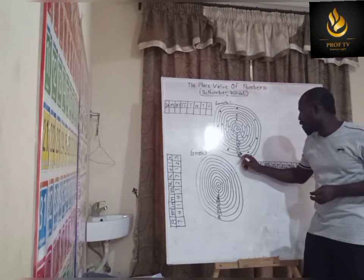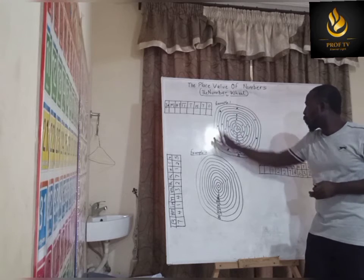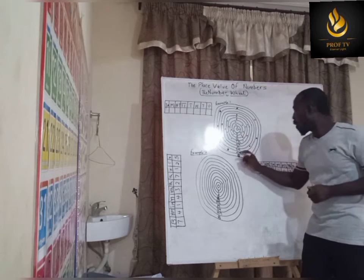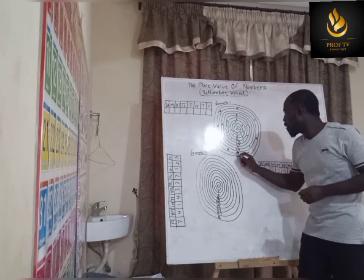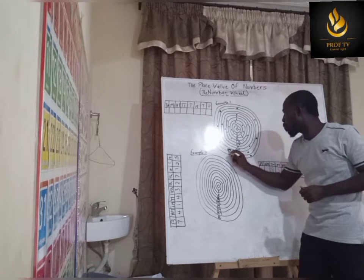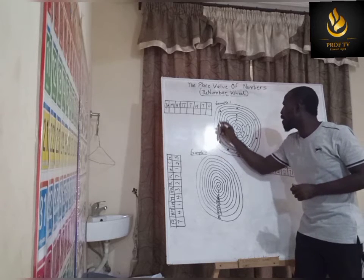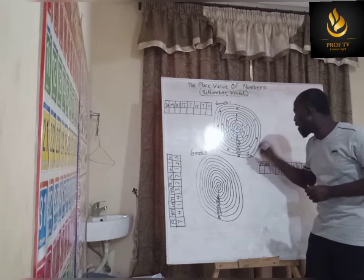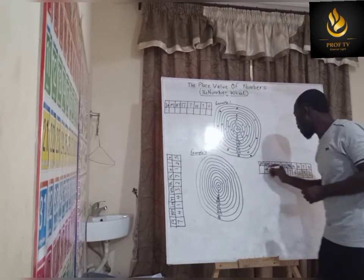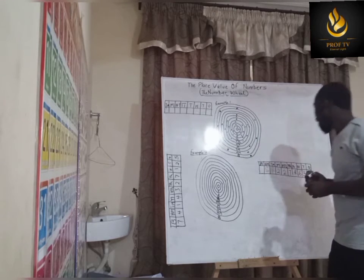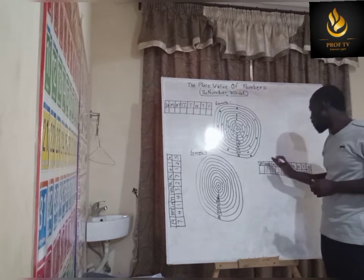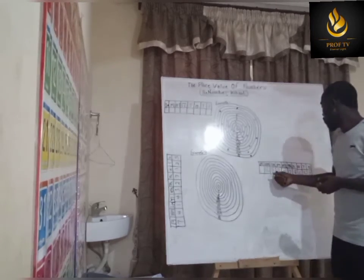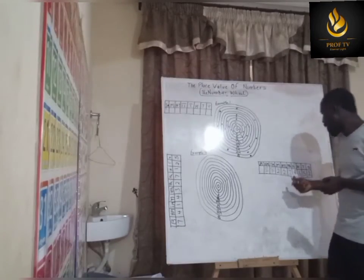Then we come to the tens. How many dots do we have? One, two, three. We write that here — three. Then we come to the hundreds. How many dots do we have? One, two, three, four, five, six. So that is six hundred. So we'll write it here — six hundred.